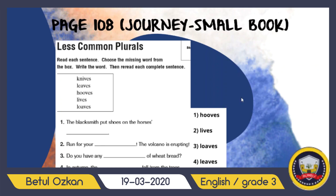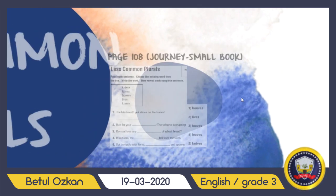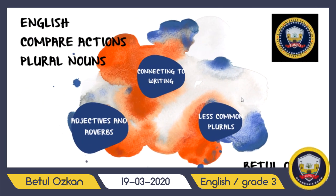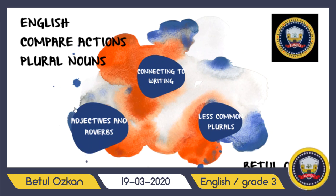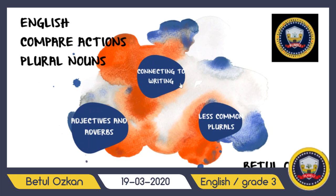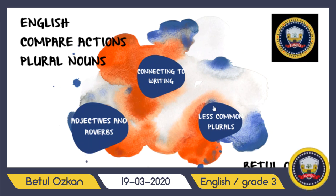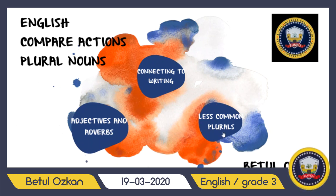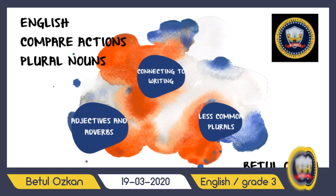During this class we talked about adjectives and adverbs while comparing two actions and more than two actions, and learned how to construct sentences using -er and -est. We also learned less common irregular plurals — for example, 'knife' becomes 'knives.' Good job, everyone! Thank you so much and hope to see you soon.